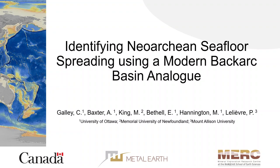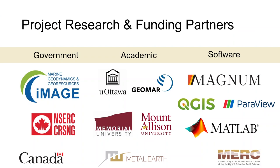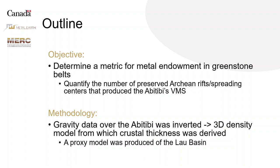Just recognizing some of our partners — much of the software I use is open source, so I really appreciate that. Leading into the objective for the talk: what I was hoping to do is determine some kind of metric for metal endowment in greenstone belts. The metric I'm looking to find is how many spreading centers or rifts you might have in the ancient setting. Hopefully more spreading centers and more rifts will lead to more VMS, which will mean more endowment.